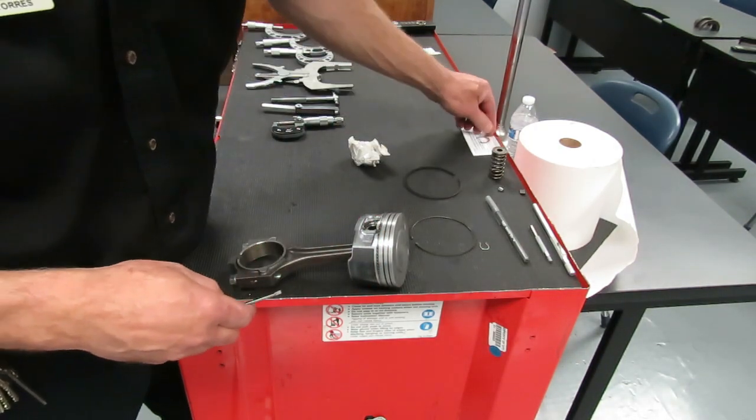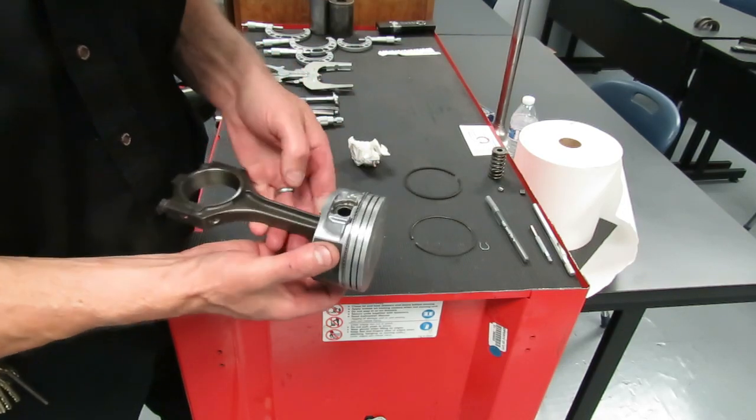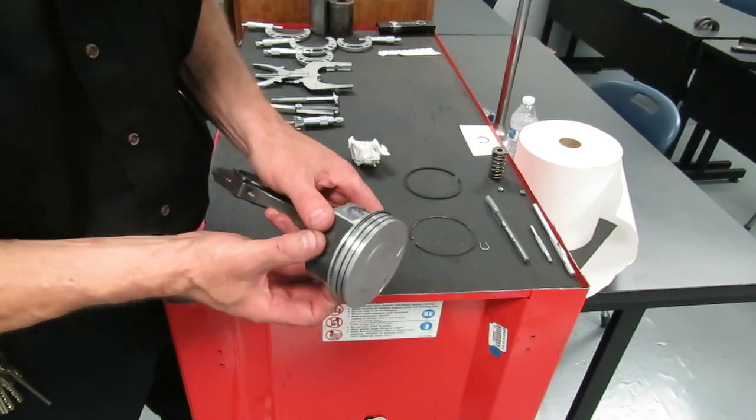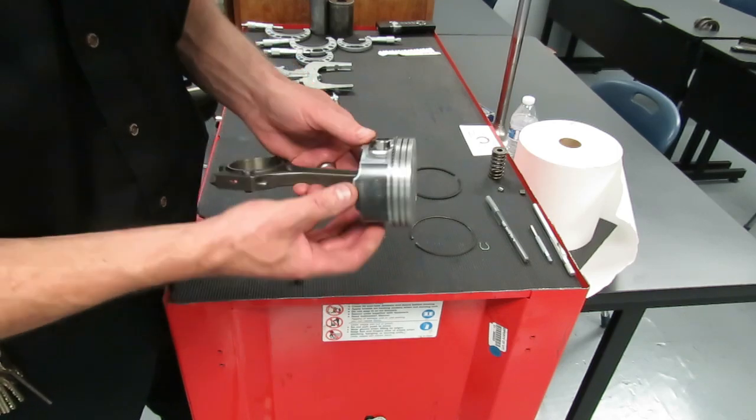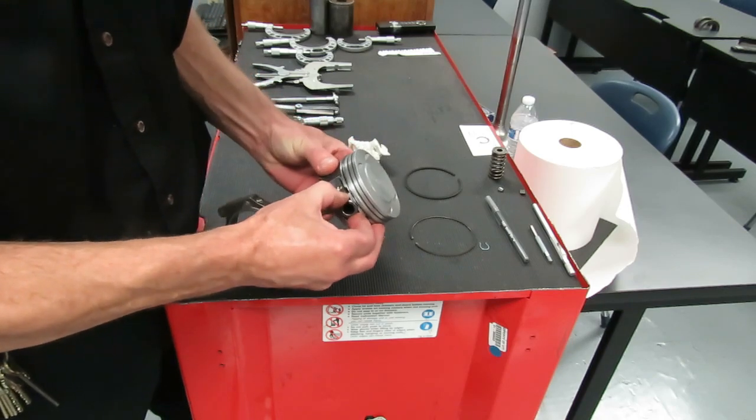Now that you've got that out, you want to put that in a safe place, and of course there's a C-clip on the other side, but you only need to take one of them out. Now that we've got this one out, we can just take our wrist pin and we can just slide it out.